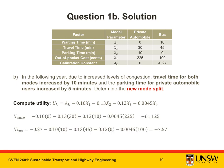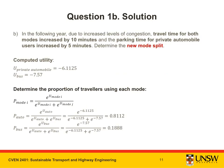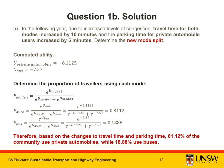With this new table of data, we repeat the solution approach from Part A. Calculating the utility values for each mode using the calibrated function yields updated results. Substituting those utility values into the binary logit model, we end up with 81.12% of the community choosing to use private automobiles while 18.88% use buses.